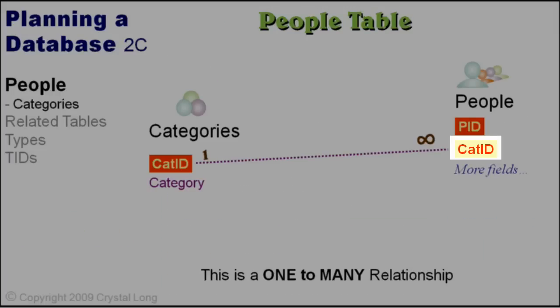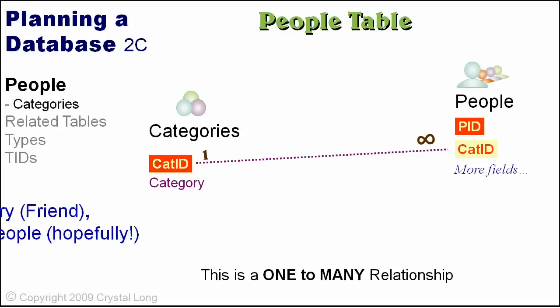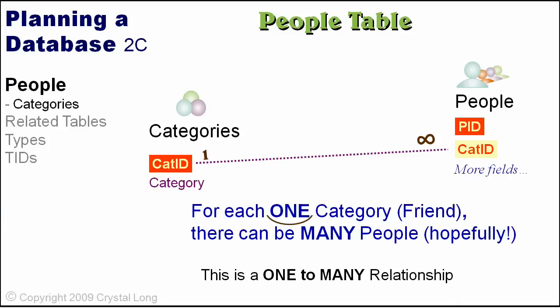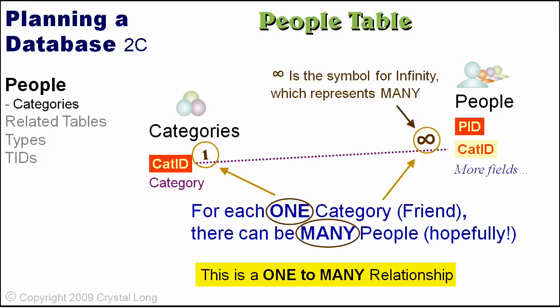CatID is a foreign key in the people table. CatID is the primary key in the categories table. For each one category, such as friend, there can be many people. There is a one-to-many relationship between CatID in the categories table and CatID in the people table.